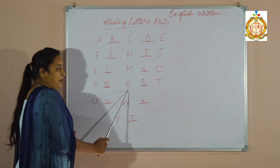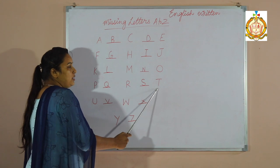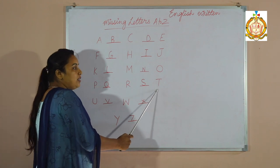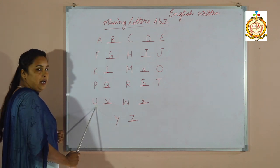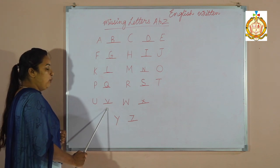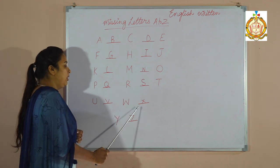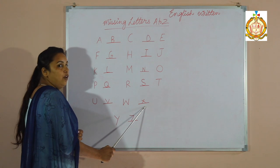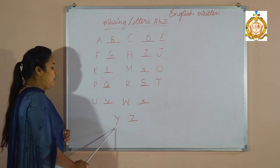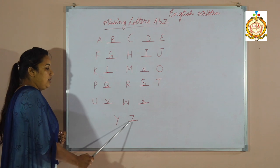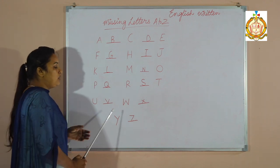R for Rabbit. S for Sun. T for Tiger. U for Umbrella. V for Van. W for Watermelon. X for Xylophone. Y for Yak. And Z for Zebra.